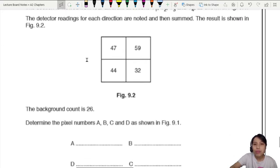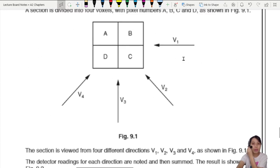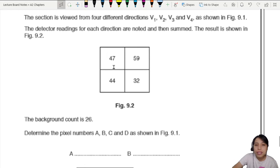The section is viewed from four different directions, V1, V2, V3, and V4 as shown above. You look from the side, from down here, bottom and a diagonal on the left. The detector reading for each direction are noted and summed. This diagram here already adds up all the directions, all the detector readings.